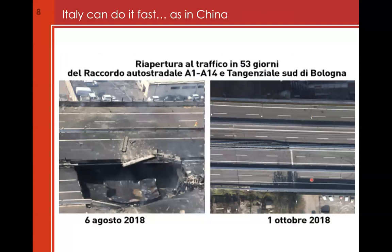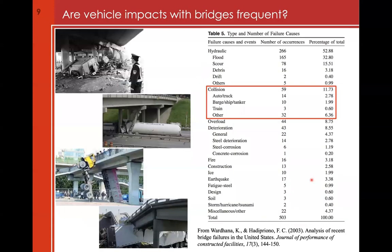For example, in 2018 a highway exploded — you can see this here — and thanks to the efficient behavior of the local government, they repaired it after a few months. It's obvious that the response of the material under such fast explosion is different from the static condition. Regarding vehicle impact — the collision of a vehicle against structural elements — it's interesting to note that these are more frequent than we might expect.